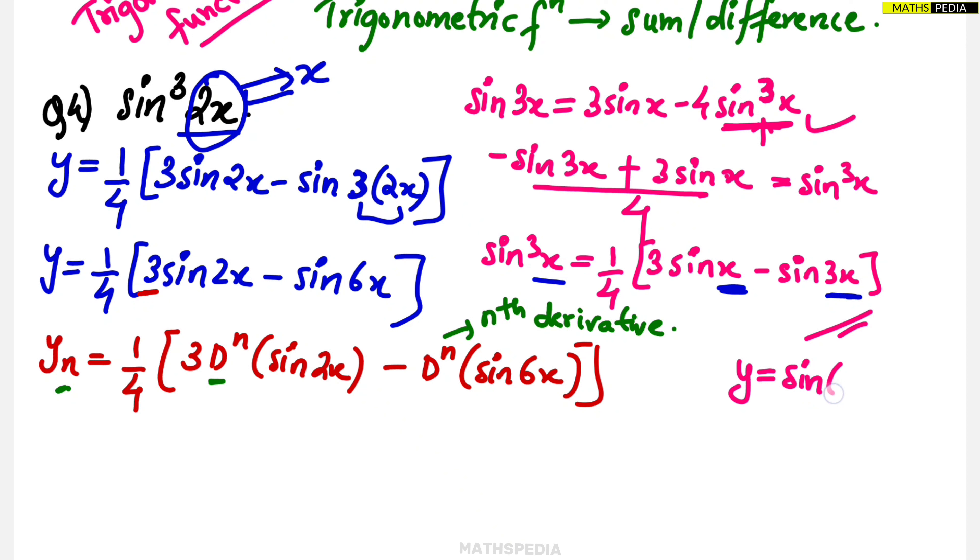If suppose y is equal to sine ax plus b, then the nth derivative of that is given by a power n into sine n pi by 2 plus ax plus b. This is the formula, so this you have to apply over here.